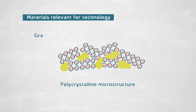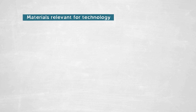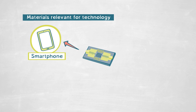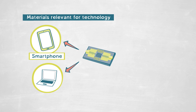so-called grain boundaries. These interfaces — these grain boundaries — are what we are interested in. For example, to give you a perspective, in microelectronic devices, the copper interconnects in your smartphone or your computer, these grain boundaries